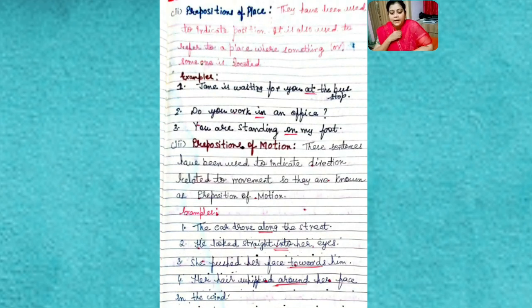Preposition of place. They have been used to indicate position. It is also used to refer to a place where something or someone is located. Look at my example.